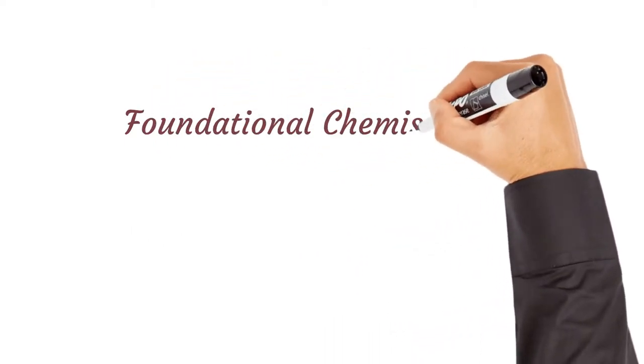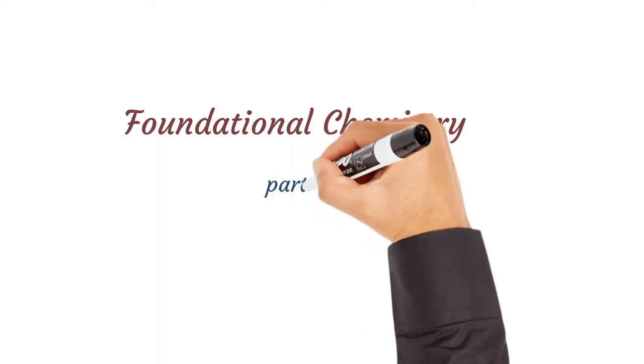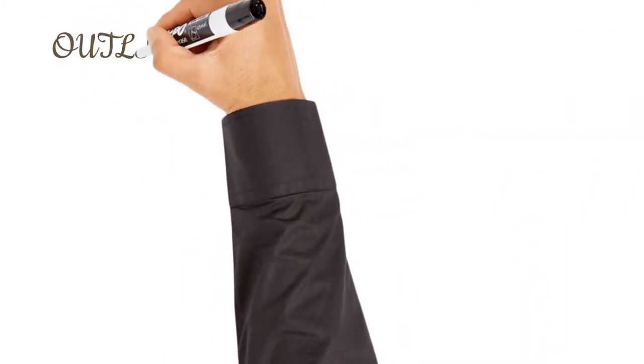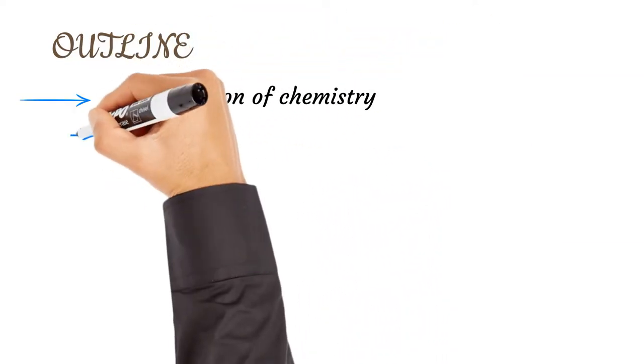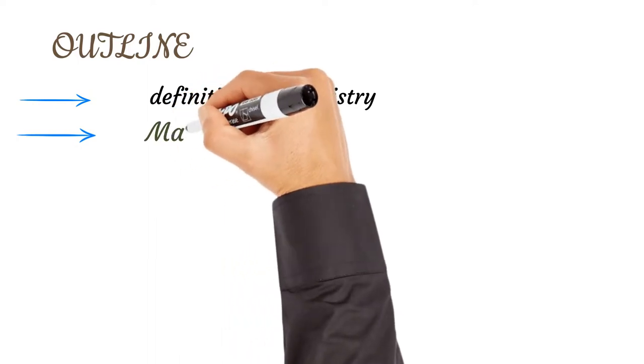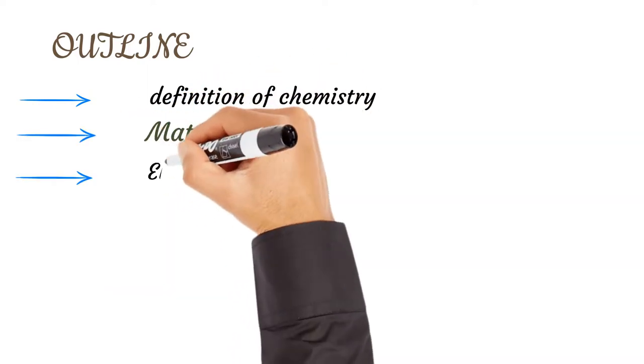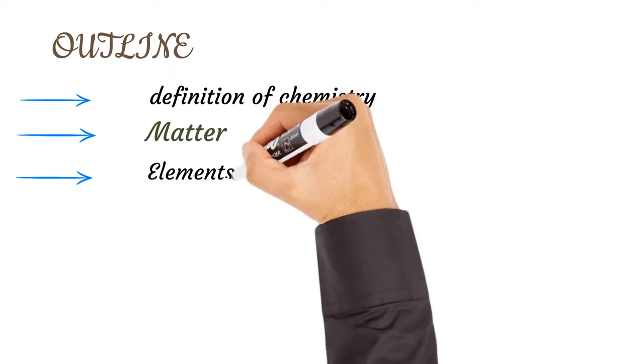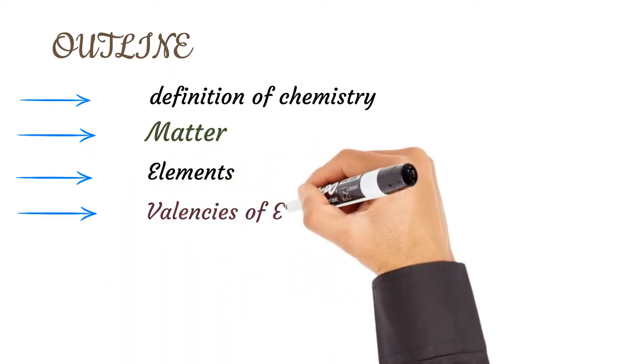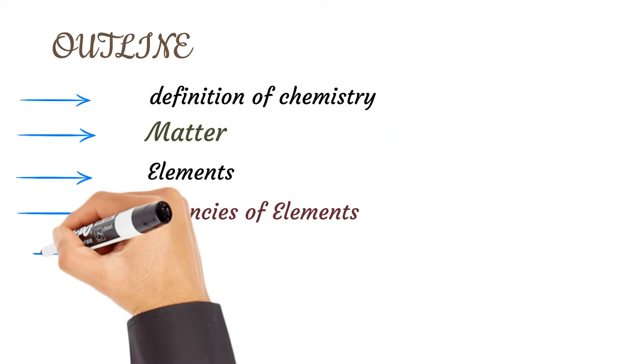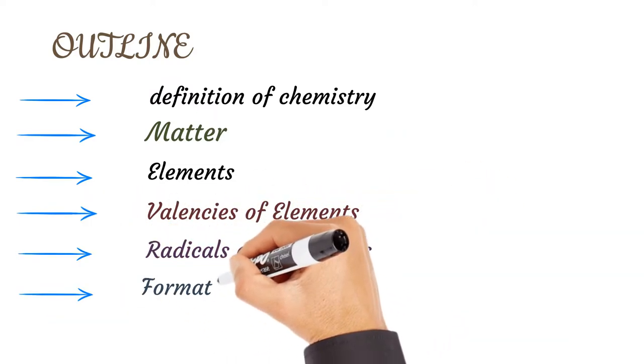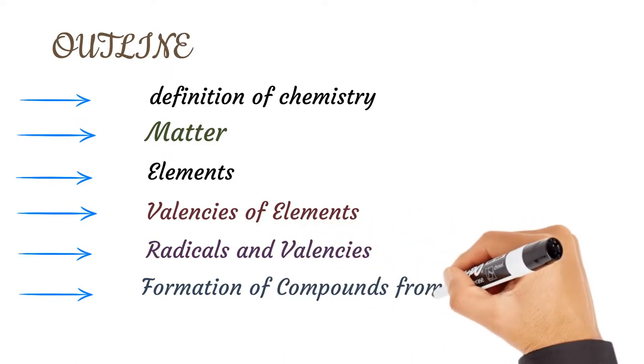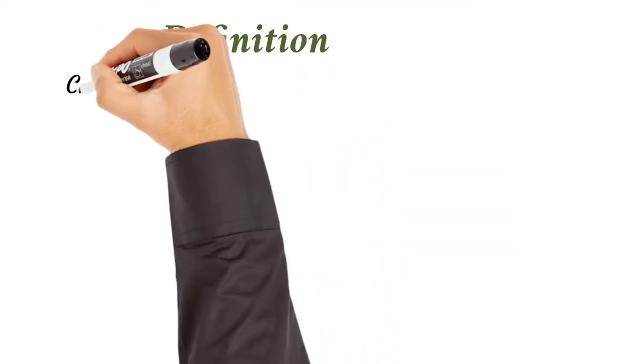Foundational or Basic Chemistry Part 1. We'll look at the following outline: Definition of Chemistry, Matter, Elements, Valencies of Elements, Radicals and Valencies, and finally Formation of Compounds from Valencies. Let's begin the journey.